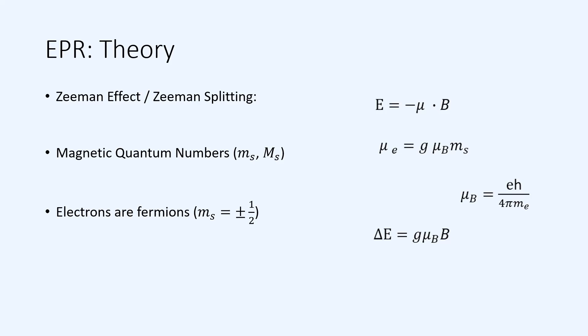We'll also have to keep in mind some ideas from quantum, specifically the magnetic quantum number M sub S, which, for electrons, or any fermions, means that M sub S is plus or minus one-half.